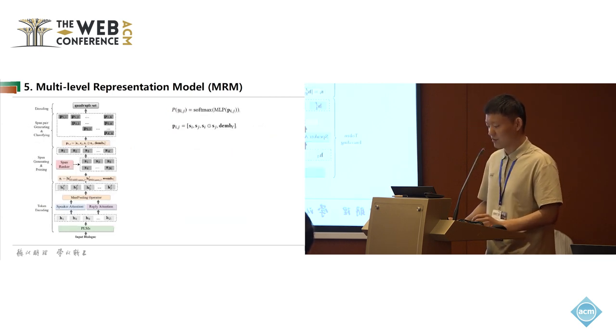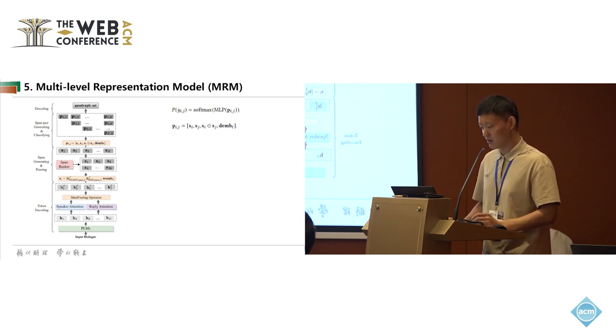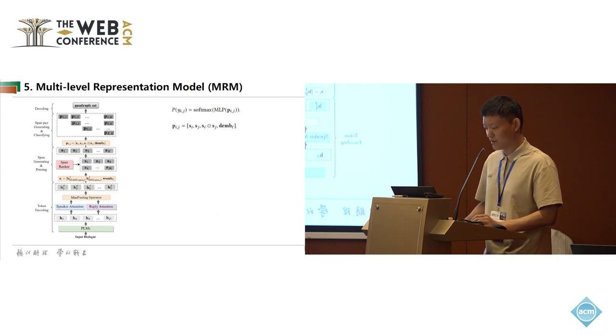At the third stage, we concatenate the vector representation of span i, the vector representation of span j, the Hadamard product of span i and span j, and the distance embeddings between span i and span j, to denote the vector representation of span pair, namely p_ij. Finally, we use STS to obtain quadruple sets.